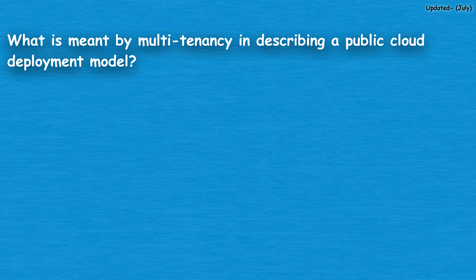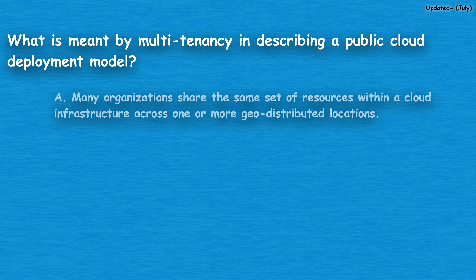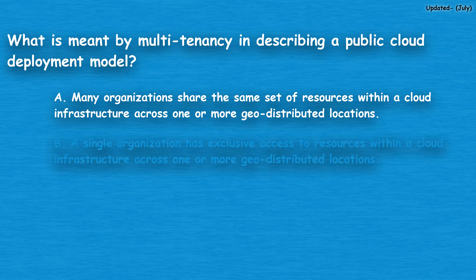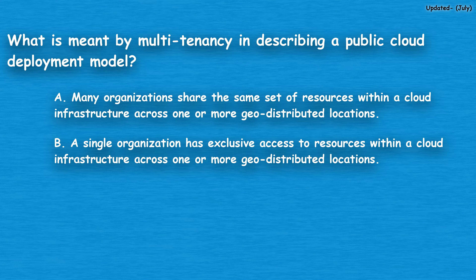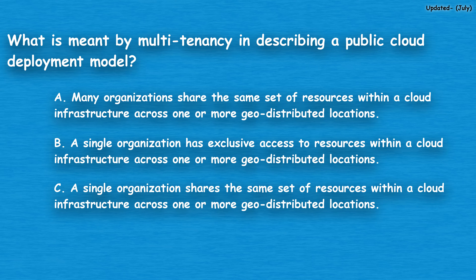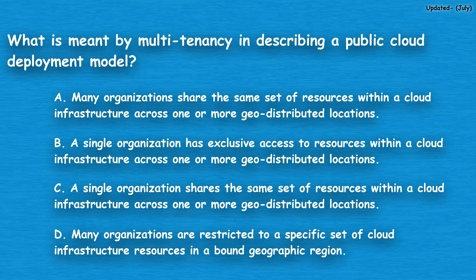The next question: what is meant by multi-tenancy in describing a public cloud deployment model? Option A: many organizations share the same set of resources within a cloud infrastructure across one or more geo-distributed locations. Option B: a single organization has exclusive access to resources within a cloud infrastructure across one or more geo-distributed locations. Option C: a single organization shares the same set of resources within a cloud infrastructure across one or more geo-distributed locations. Option D: many organizations are restricted to a specific set of cloud infrastructure resources in a bound geographic region.